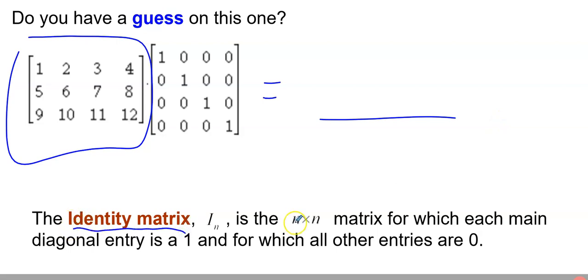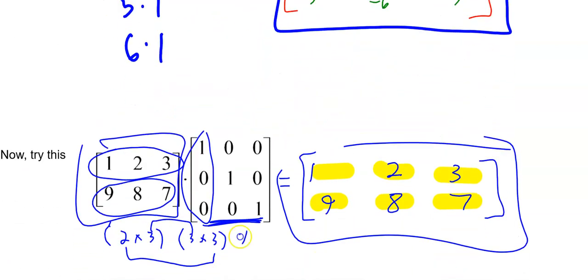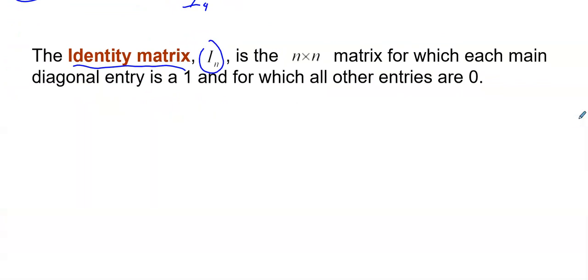This is called the identity matrix. It's always a square matrix — that's why it says n by n. The main diagonal is always 1; all the other entries are 0's. It's the top-left to bottom-right diagonal. I could label this the I₄ matrix, this one the I₂ identity matrix, and this one the I₃ identity matrix, based on the dimensions. You do need to know that this is the identity matrix, because identities have to do with inverses, as you'll see in a second.